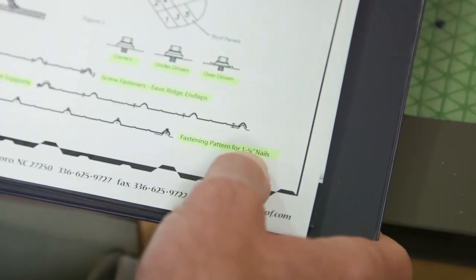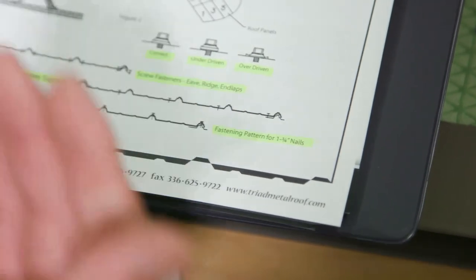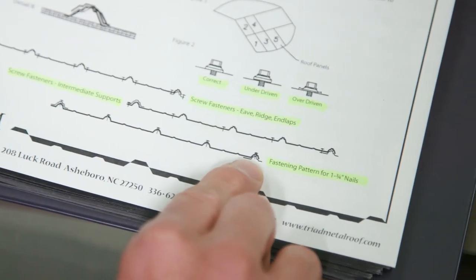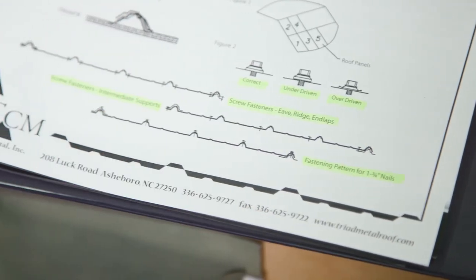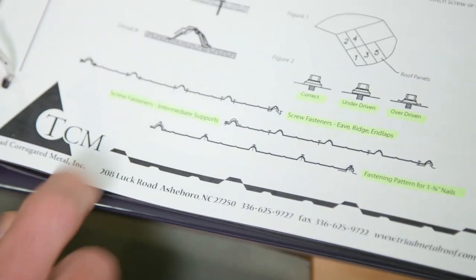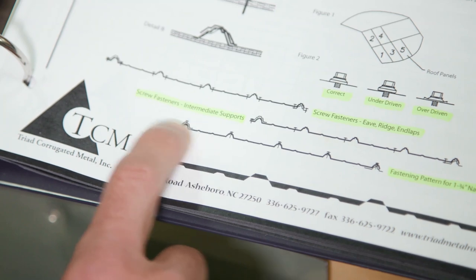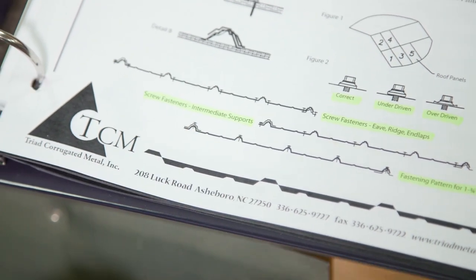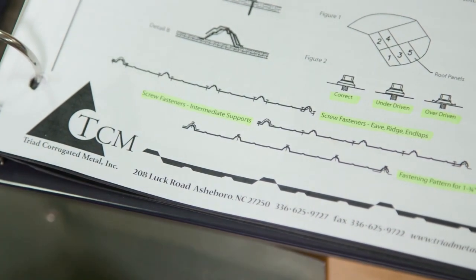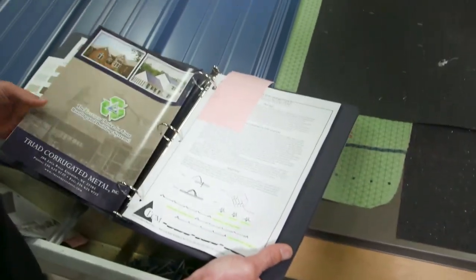I would never recommend putting nails through your roof when you could put screws. For those, believe it or not, they did put those through the high part. So if you guys out there want to put something in the high rib, put a nail in it. But I'm not a big fan of nails in metal. It just seems to work its way out and span and contract and never holds.